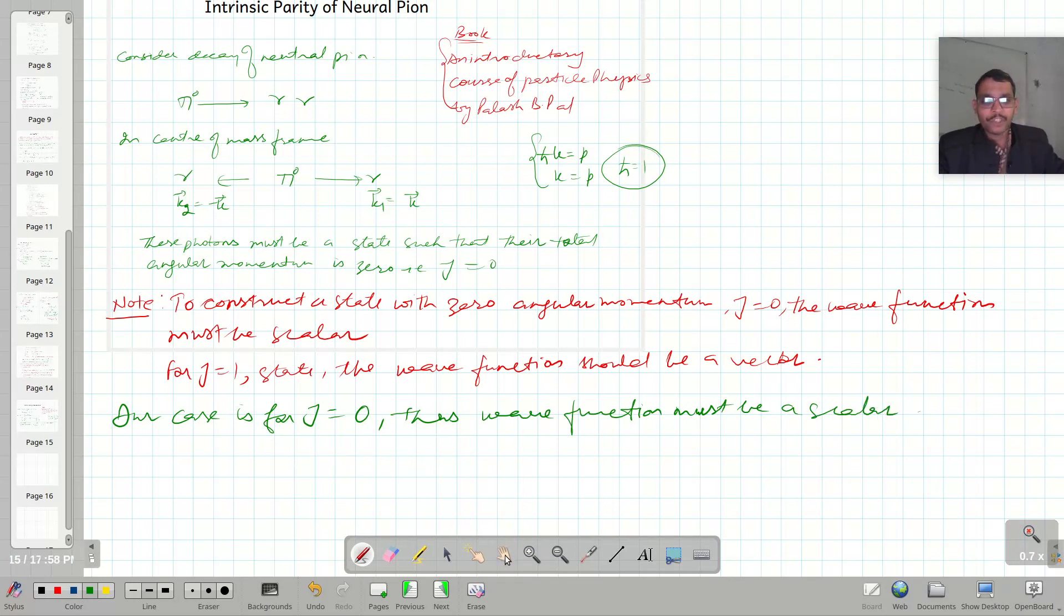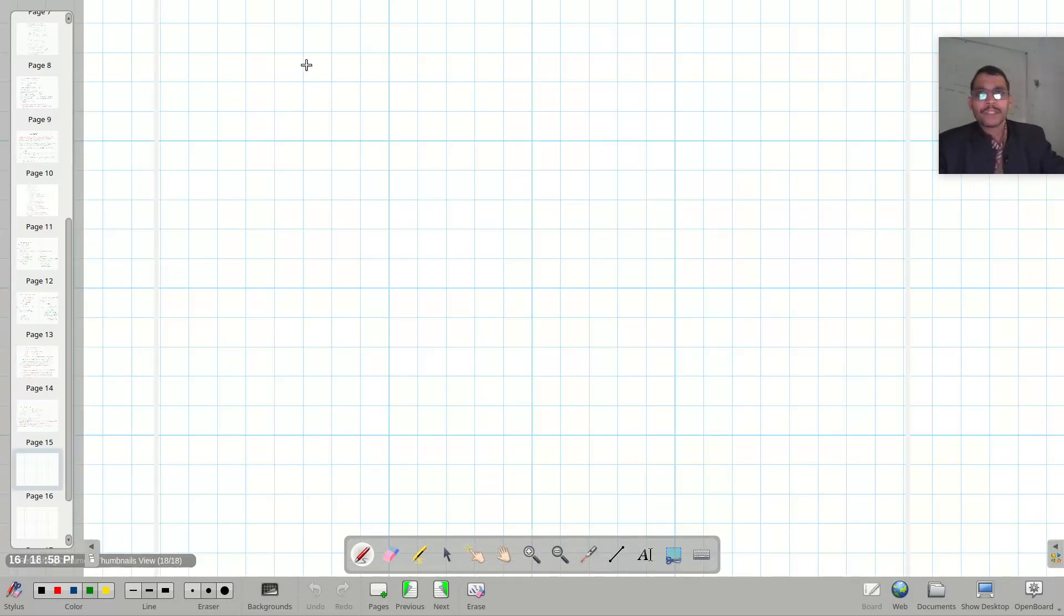So for the wave function to be a scalar, there are two possibilities. One is epsilon 1 dot epsilon 2 into f of k. And epsilon 1 cross epsilon 2 into k into f of k.